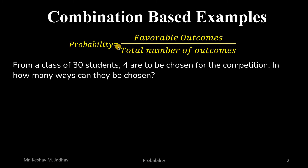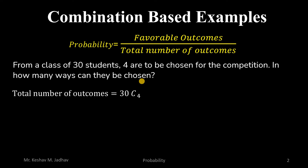Probability is the ratio of favorable outcomes divided by total number of outcomes. For example, from a class of 30 students, 4 are to be chosen for a competition. In how many ways can they be chosen? Out of 30 students we have to select 4, and we can calculate that using the combination formula. The number of ways to select those 4 students is 30C4, which equals the total number of outcomes.